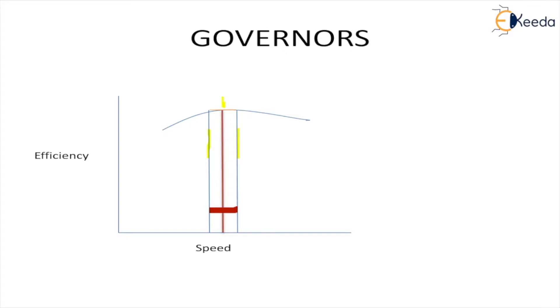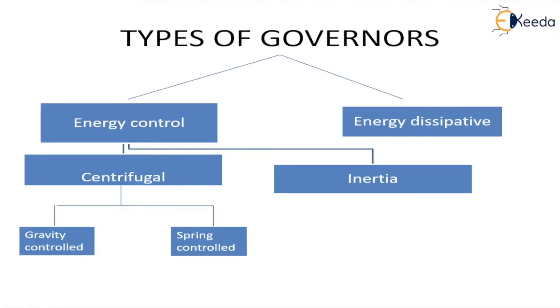The red line shows the optimum operating speed. Of course it is not possible for any engine to always work at a constant speed, so there are certain variations. We always allow a minimum and a maximum variation which defines the range of speed, and we always want the engine or turbine to work within this range — that is why governors are important.